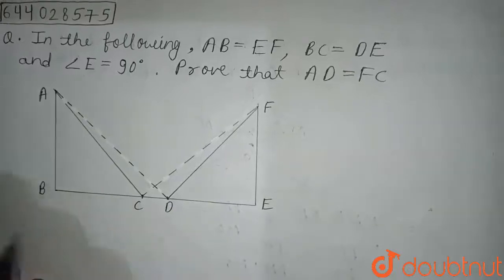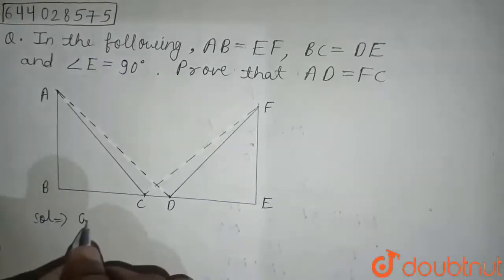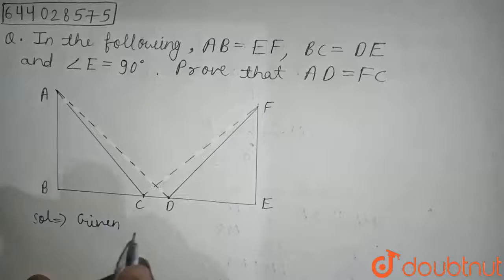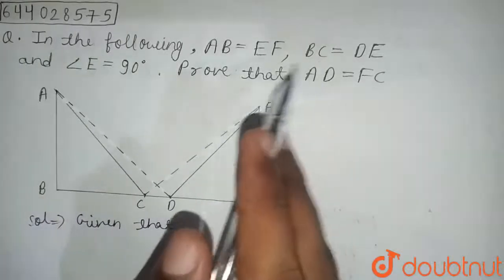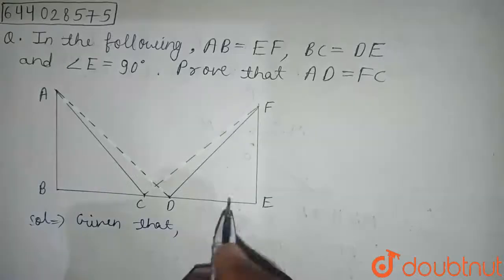Firstly, in the question it is given that AB equals EF and BC equals DE is given.